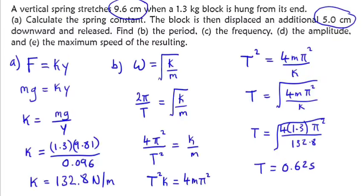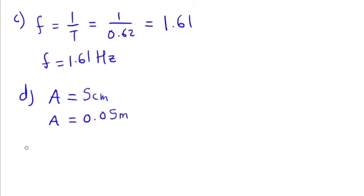We want to find the maximum speed for part E. Maximum speed, or velocity maximum, is given by amplitude multiplied by omega, v_max = Aω. Amplitude we already have. But omega we don't have. We know that omega is the same as √(k/m).